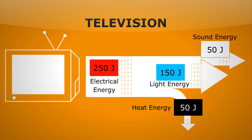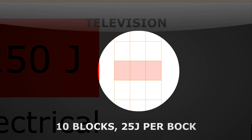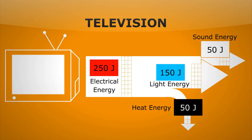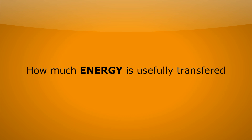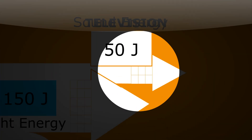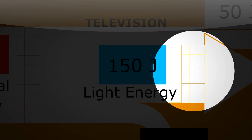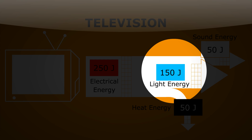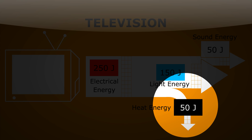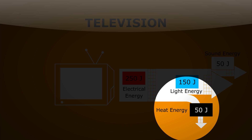Let's look at one more example, this time for the television — a little bit more complicated here. We've got 250 joules of energy going in, and there are 10 blocks, so we've got 25 joules per block this time. We read a Sankey diagram in much the same way we read a graph. We've got 250 joules of electrical energy going in. There are actually two arrows for useful energy transfer: one is two blocks wide — that's 50 joules of sound energy. The other arrow is six blocks wide, so that's 150 joules usefully transferred as light. The wasted arrow going down is two blocks wide, so 50 joules of wasted energy — and as it often is, it's wasted as heat.